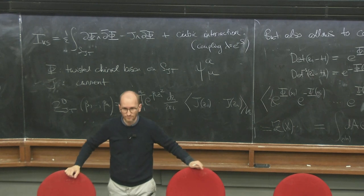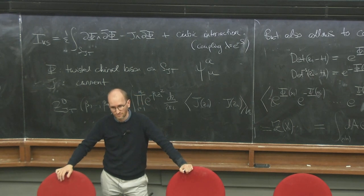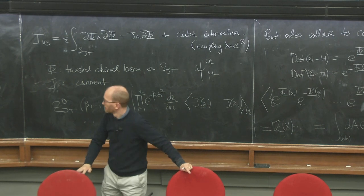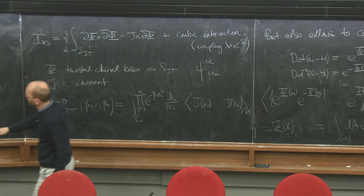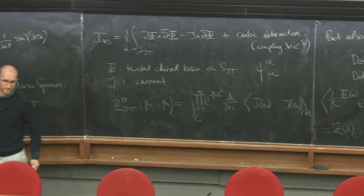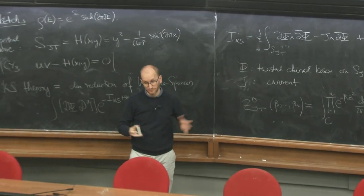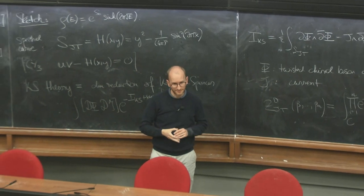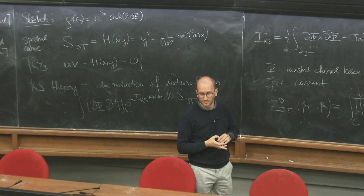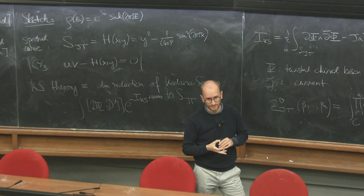Question: if there are no non-compact branes, there should be a spatial direction on which the matrices depend — are these some kind of path integrals? Yes, they are wrapped on some cycle in this Calabi-Yau. So then they are like instantons — they don't have extension in any of the non-compact directions. Yes, I'd call them the instantons.